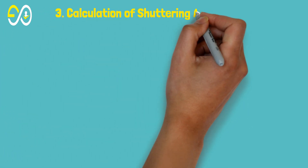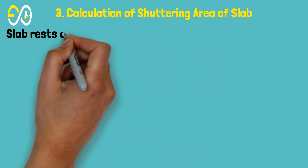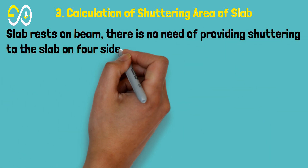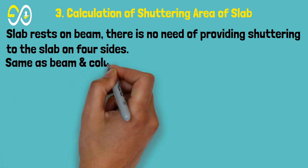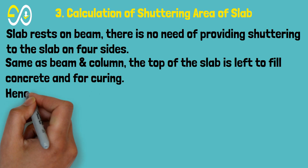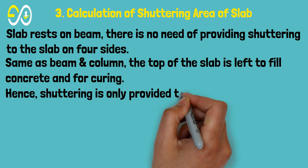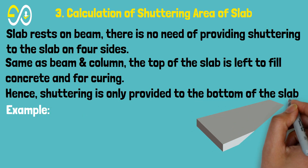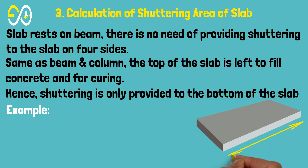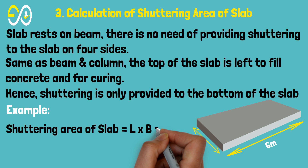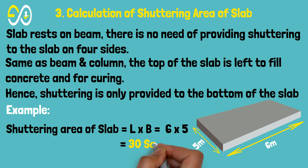Calculation of shuttering area of a slab. Since the slab rests on beams, there is no need to provide shuttering to the slab on four sides. Same as beam and column, the top of the slab is left open to fill concrete and for curing. Hence, shuttering is only provided to the bottom of the slab. Example: shuttering area of slab equals L times B equals 6 times 5 equals 30 square meters.